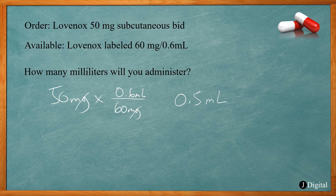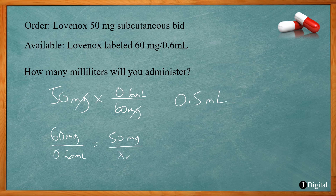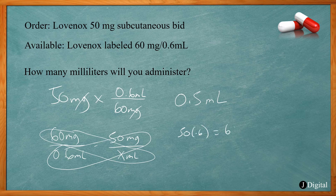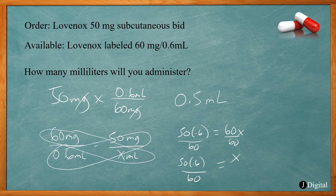You can also set up a proportion: 60 milligrams per 0.6 milliliters equals 50 milligrams per x milliliters. Cross multiply: 50 times 0.6 equals 60x, then divide both sides by 60 — 50 times 0.6 divided by 60 gives x equals 0.5 milliliters. Either dimensional analysis or proportion gives the same result — both methods work for this type of problem.